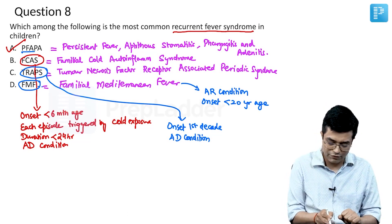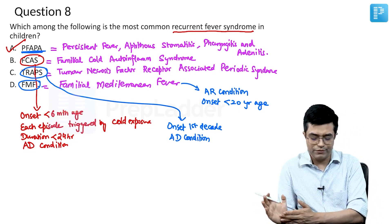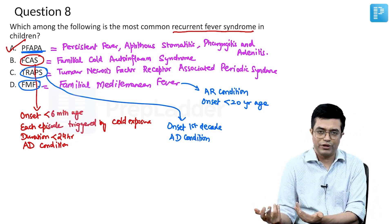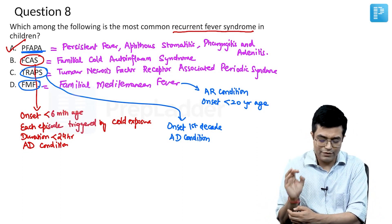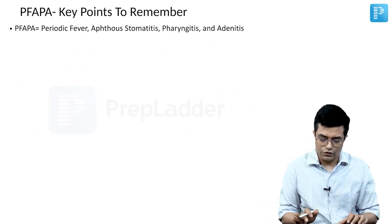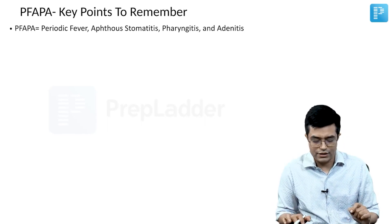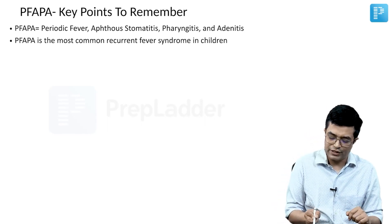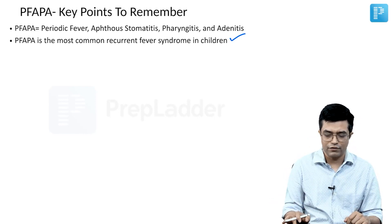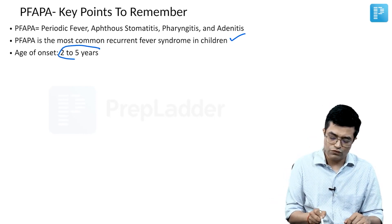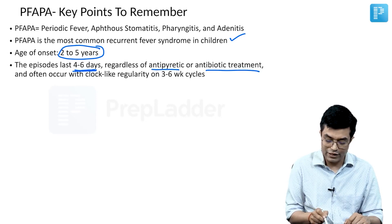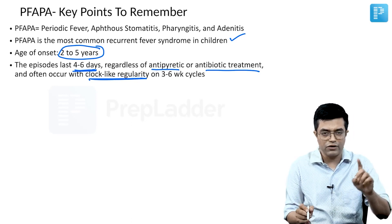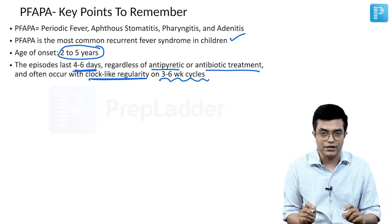Now for PFAPA — the key points summarized. PFAPA is the most common recurrent fever syndrome in children, a direct line taken from Nelson. Age of onset is 2 to 5 years. Episodes last about 4 to 6 days regardless of antibiotic treatment, and often occur with clock-like regularity in 3 to 6 week cycles.